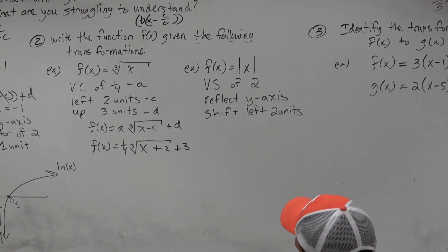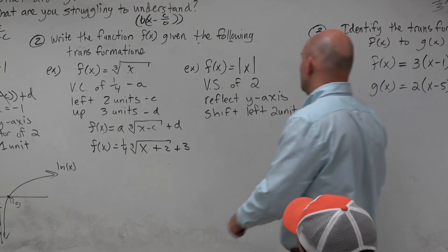So the next one is an absolute value. Now we have a vertical stretch. That's an A.